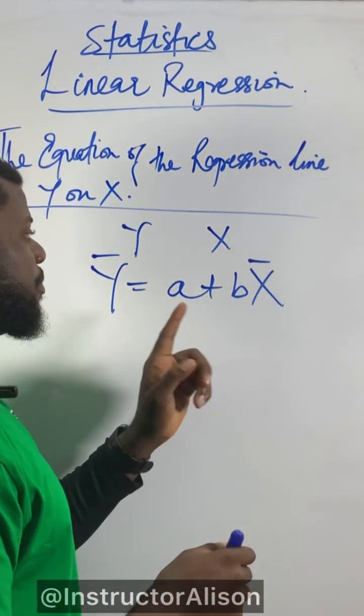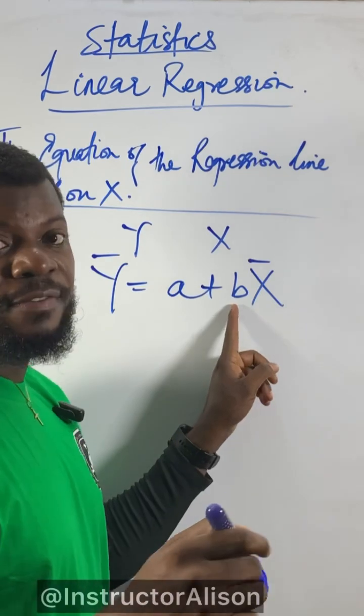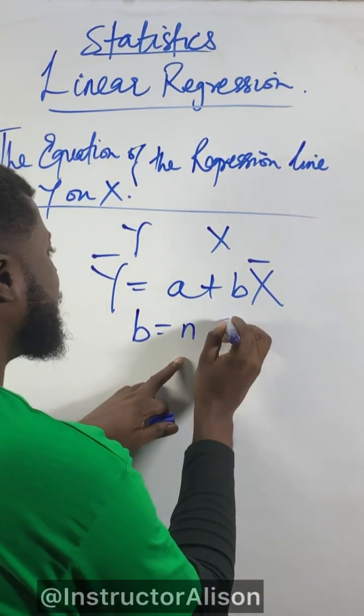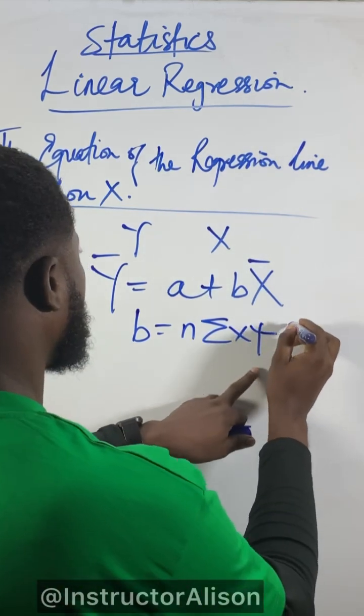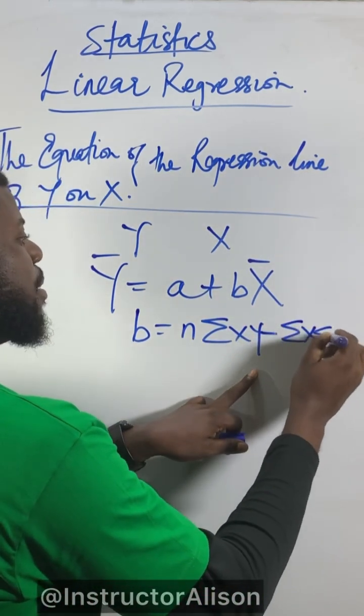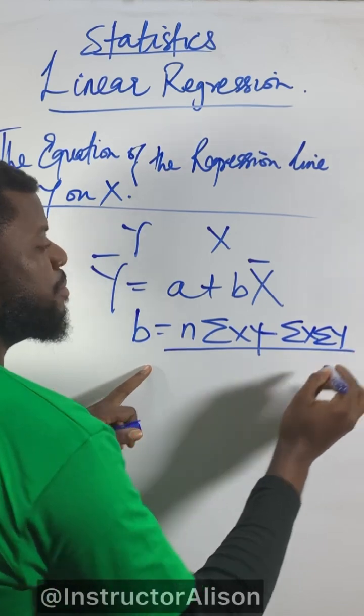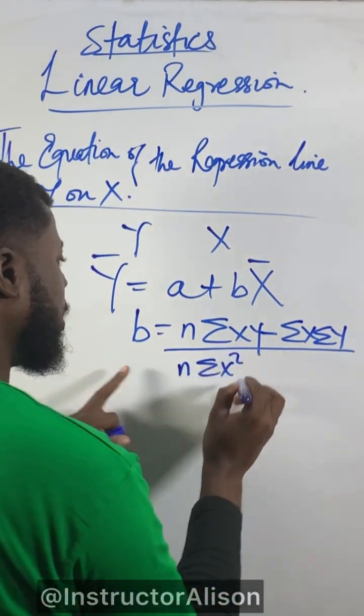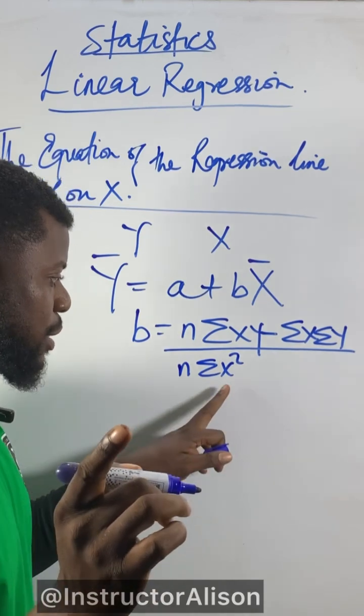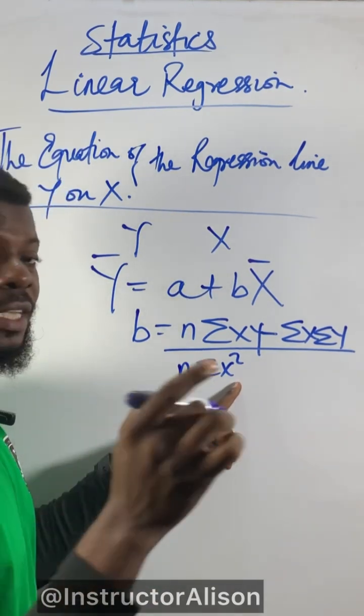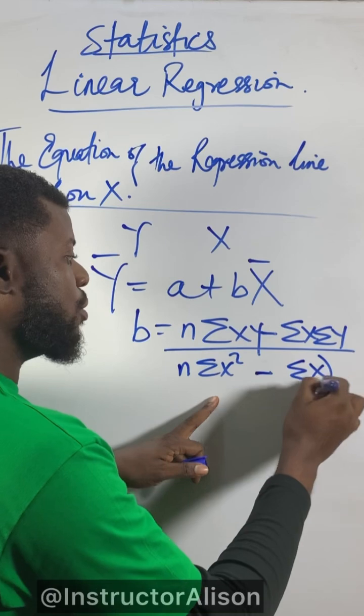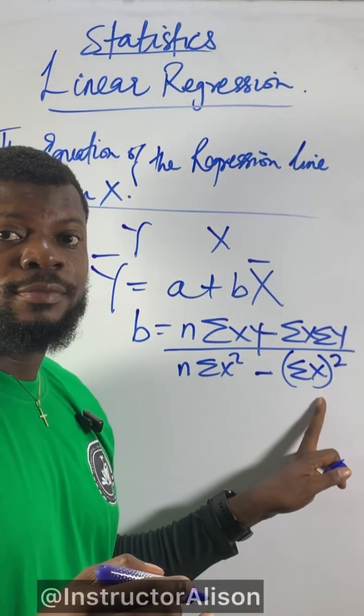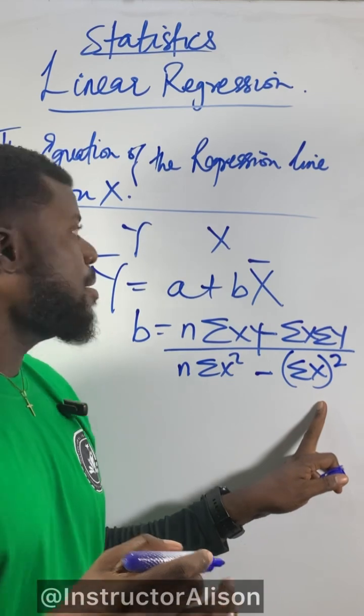The formula: b equals n times sigma xy minus sigma x times sigma y, divided by n times sigma x squared minus sigma x all in brackets squared. This confuses students because when you get sigma x squared, you don't get sigma x all with the brackets and then square. These give different values.